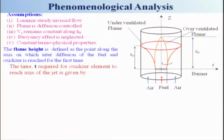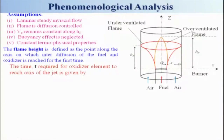What we need to know is the time required for the oxidizer to reach the axis of the jet. Looking at the z-axis and r-axis, the oxidizer comes from outside and diffuses inward due to molecular diffusion to reach the jet axis. The time required is nothing but HF divided by Vz, since the jet has uniform axial velocity Vz.